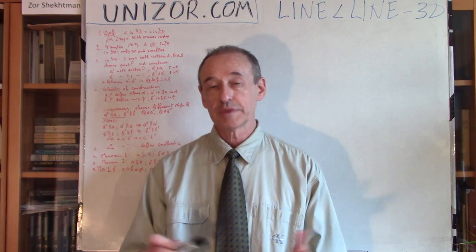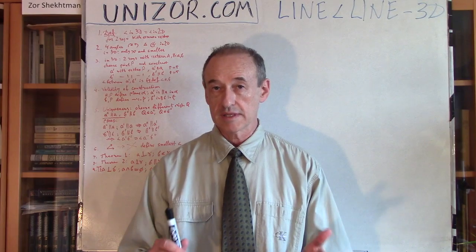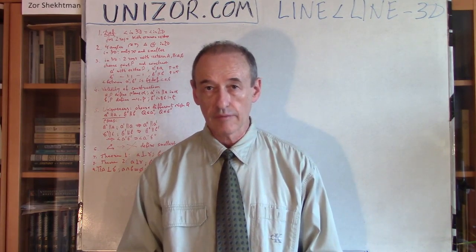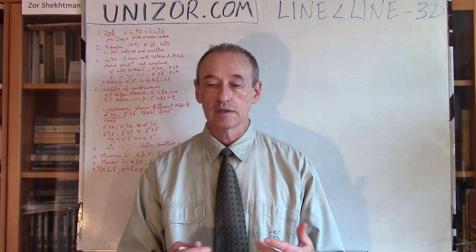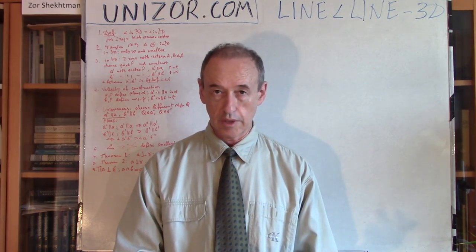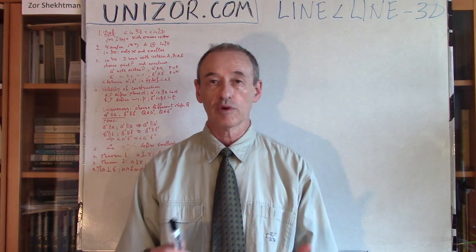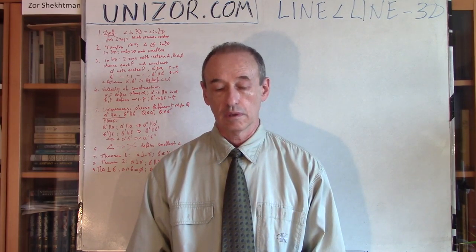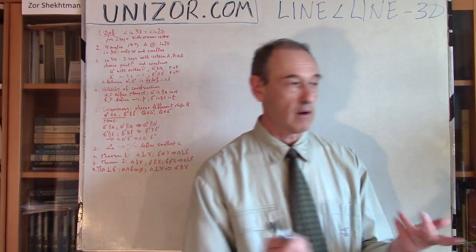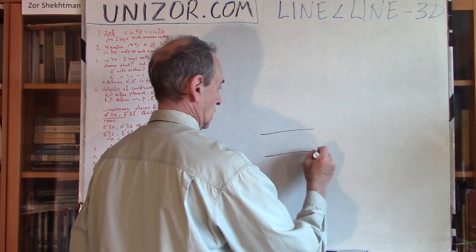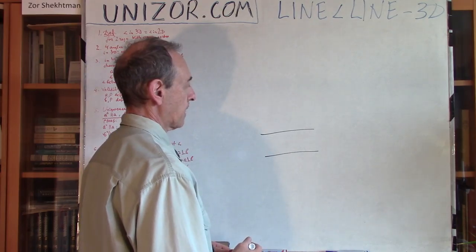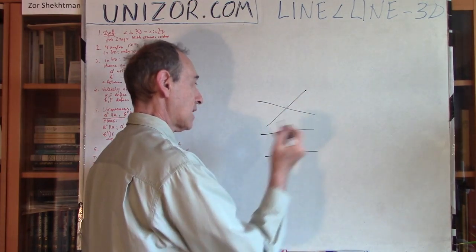First of all, two lines which are in the same plane form an angle which we know basically everything about. Our purpose right now is to transfer the definition we know about the two-dimensional case into 3D. There is one very important difference. In two-dimensional space, two lines are either parallel — in which case we say they form an angle of zero degrees — or they intersect, and then there is an angle.